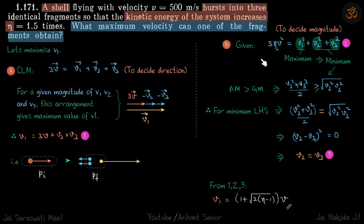Now let's talk about magnitude. We have this equation which we got from our kinetic energy: 3η v squared equals v1 squared plus v2 squared plus v3 squared. Now in order to maximize v1 squared, the sum of these two should be minimum because this is a constant which is given in the question.